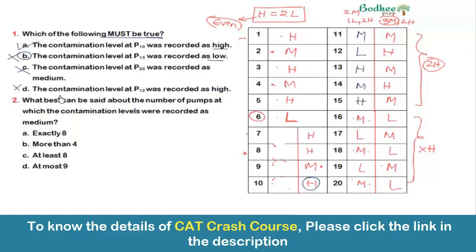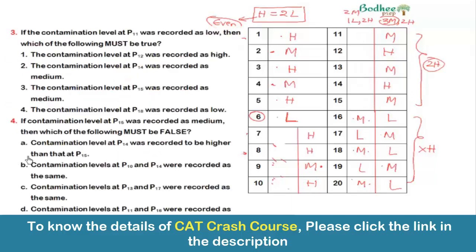Question 2 asks what can best be said about the number of pumps with medium contamination. We determined exactly that H = 8, L = 4, and M = 8. So the answer is exactly 8 pumps recorded medium contamination, and Option A is correct.